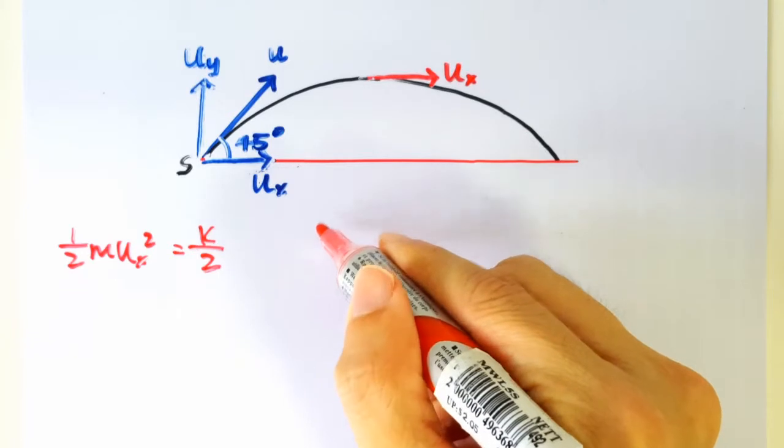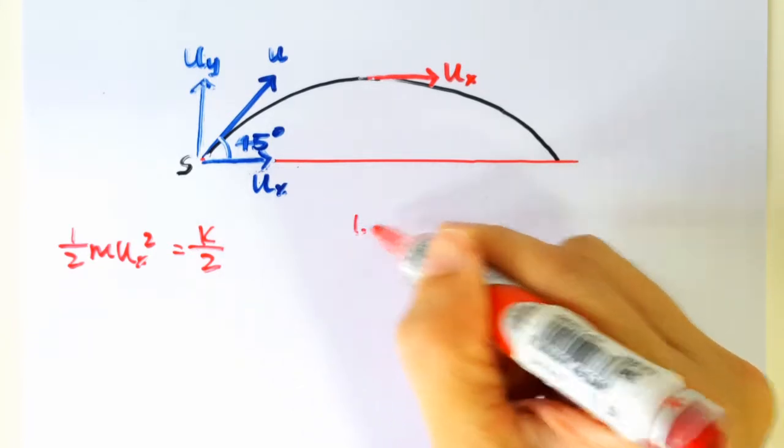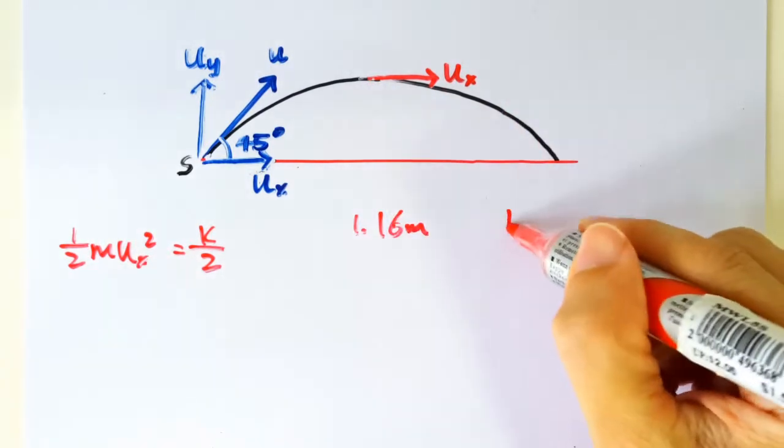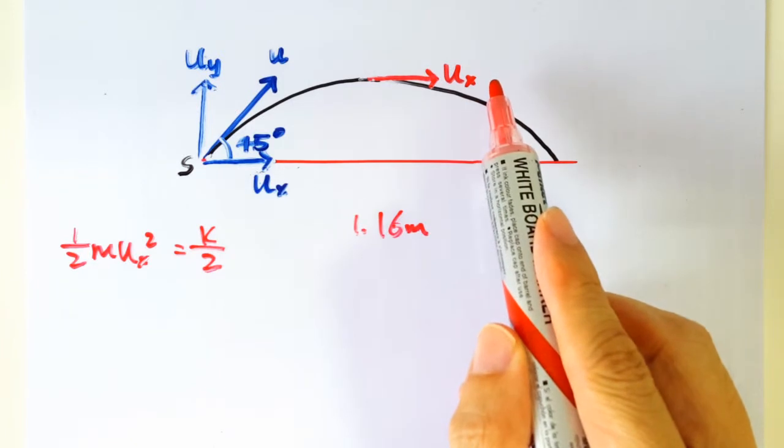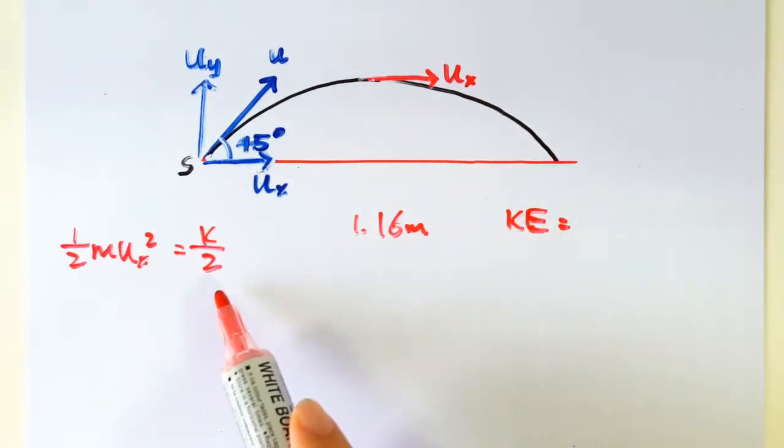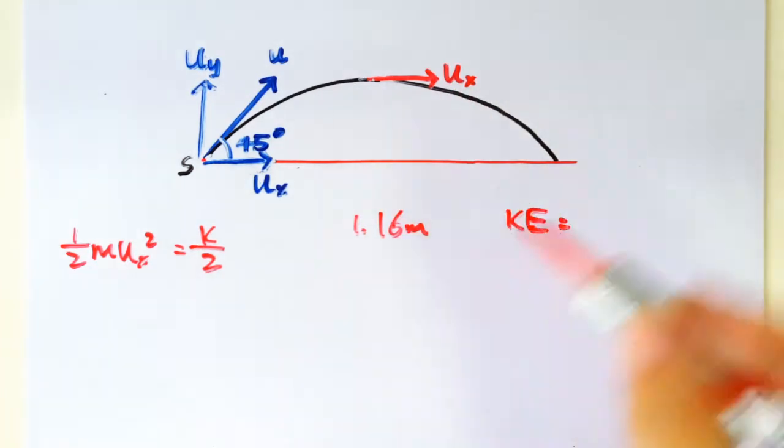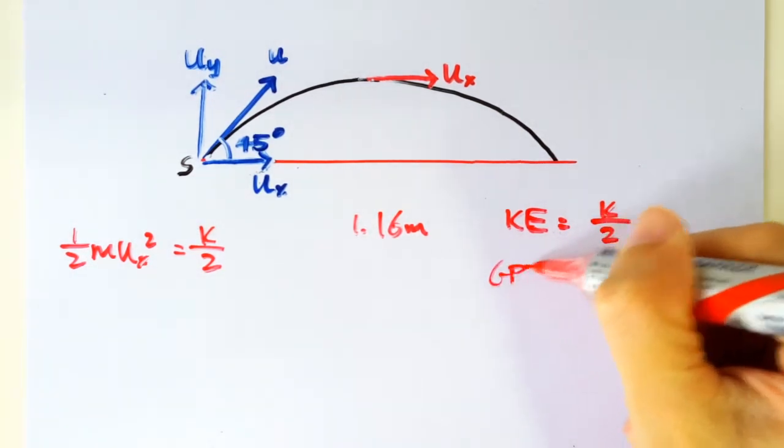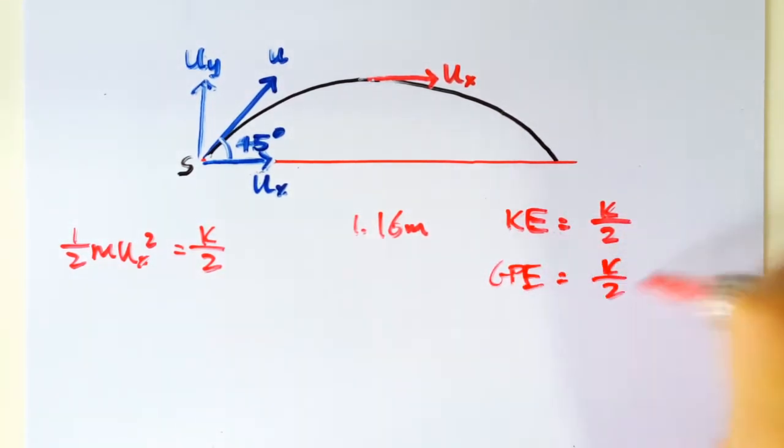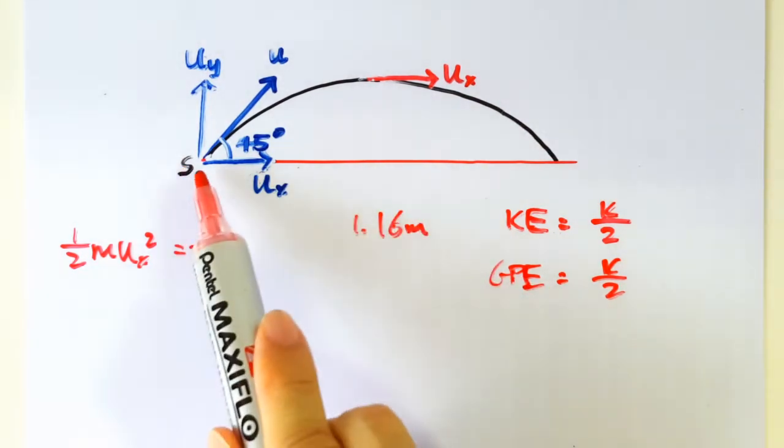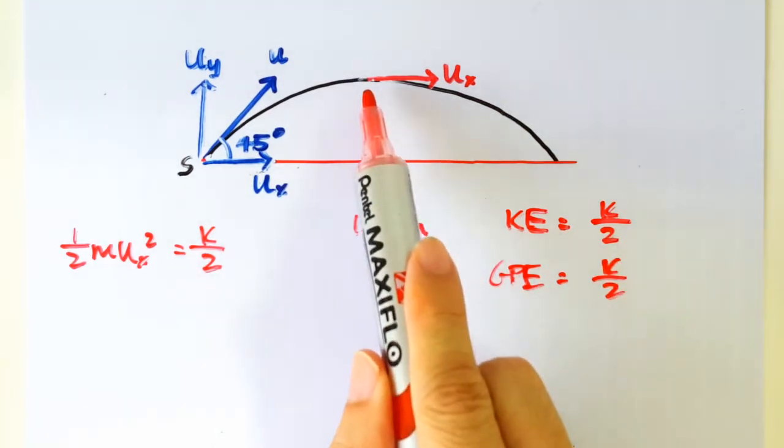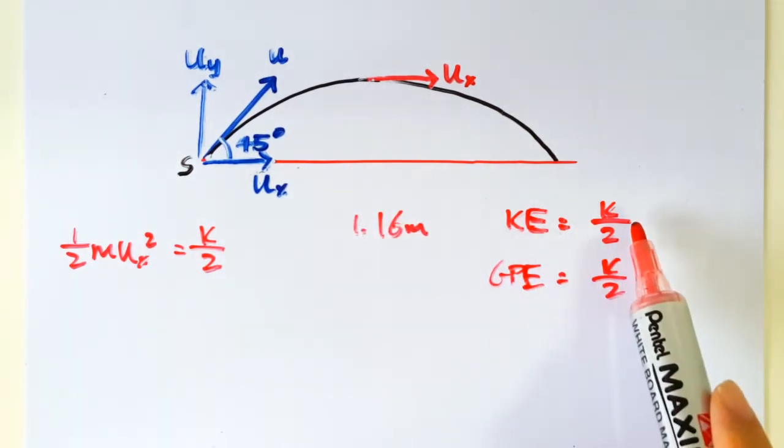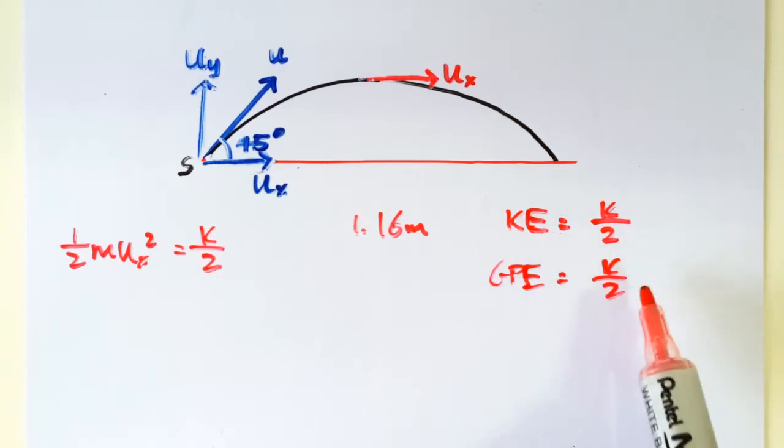So the horizontal velocity when it's at the peak is still Ux. So for this part here, we are solving for the 16 meters. When it's at here, the KE we know should be equal to half M Ux square, which is K over 2. Half M Ux square is K over 2. And so we know the GPE is also K over 2 when it's at the top there. The reason is because total energy was K. So the sum of these two must always add up to K.